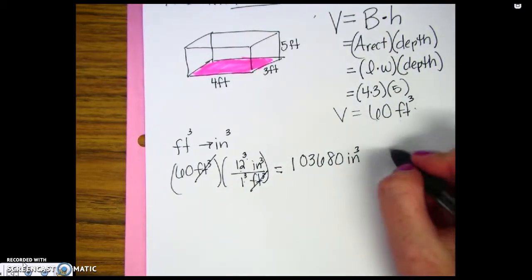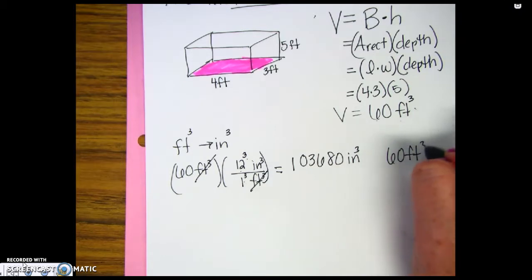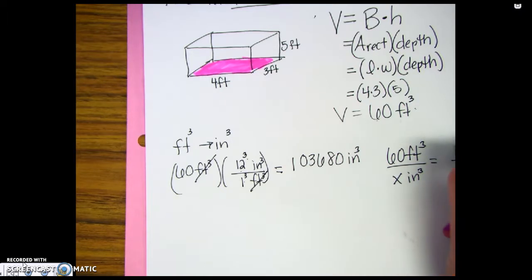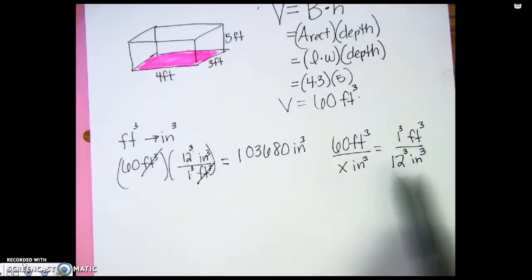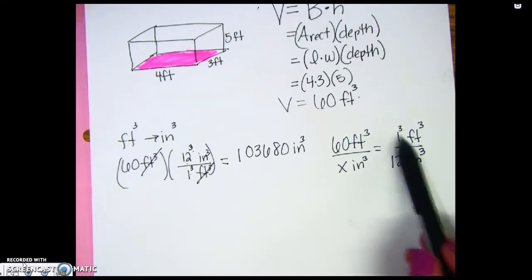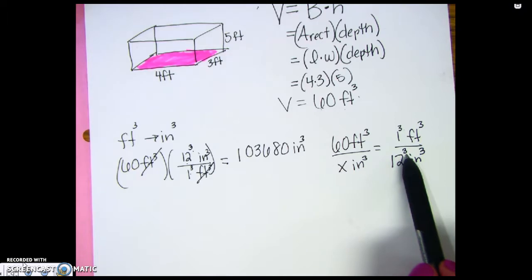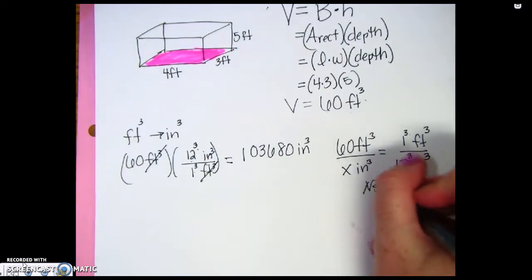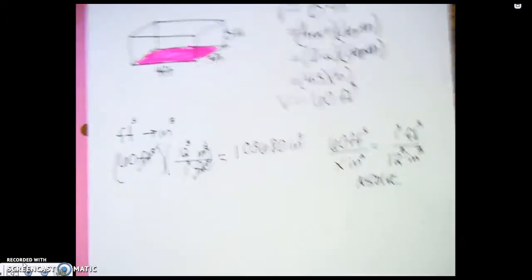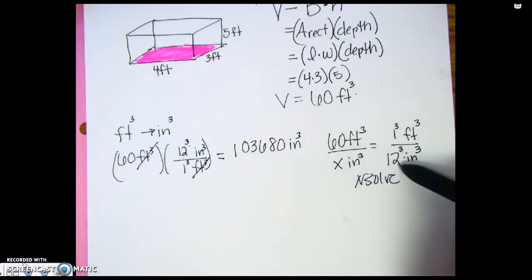Now for those of you that want to do the proportions you can do 60 feet cubed over X inches cubed. You can again do one cubic foot, but again, it's 12 cubed inches cubed. So it's one cubed, 12 cubed. I have to cube them if I'm going from one dimension to three dimensions again. You can use and solve here if you want or you can cross multiply. It still is 60 times 12 cubed.